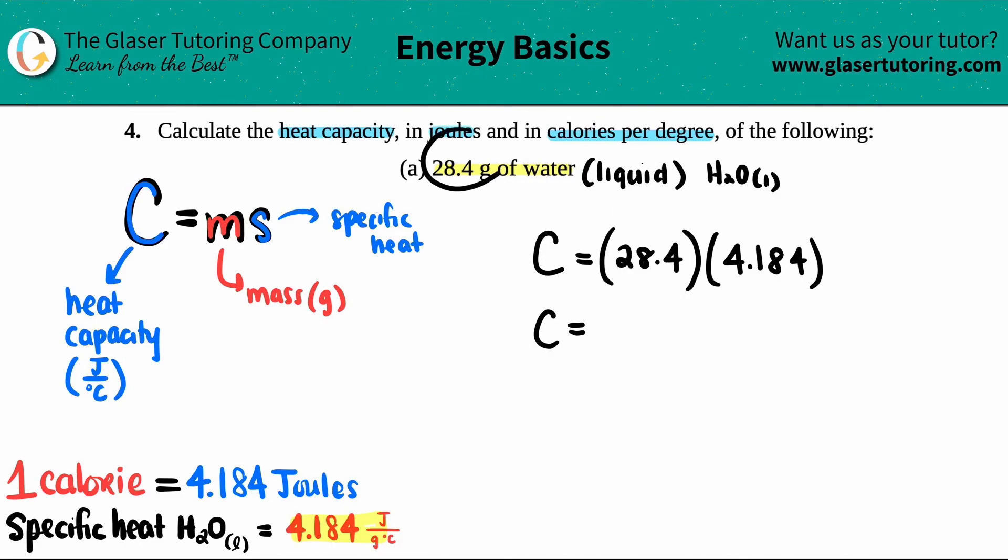With three sig figs, since I started off with three sig figs I should end with three sig figs, so this would be roughly about 119 joules per degree Celsius.